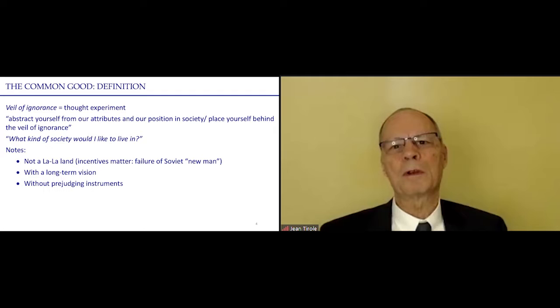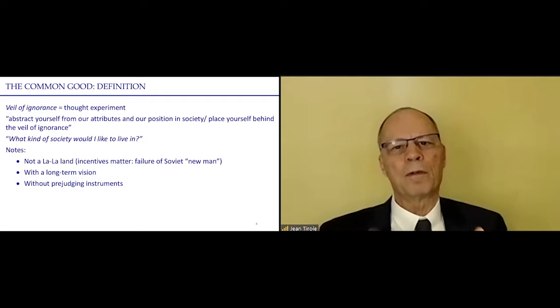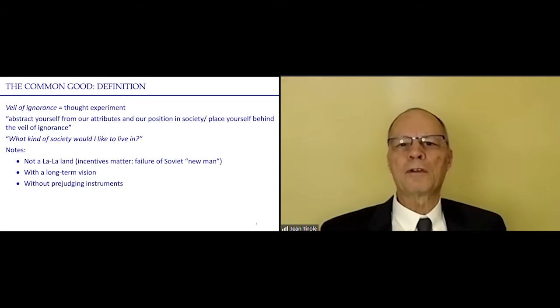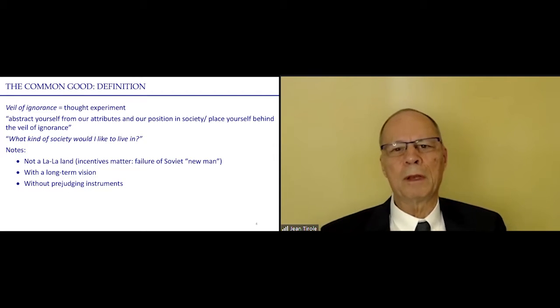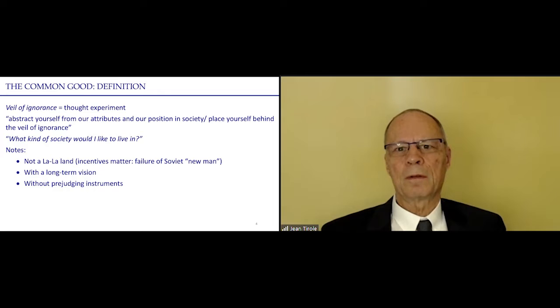But what is the common good? The common good can be defined through a thought experiment. This thought experiment has been designed by philosophers over the centuries, and it's called the Veil of Ignorance. It's a very simple thought experiment. Imagine that you are not born yet. You don't know whether you'll be a man or a woman, a Han or an ethnic minority, whether you're born in a rich family or a poor family, or if you are French or Chinese. Maybe you don't know what kind of education you will get, what kind of genes you will get. Will you have cancer or no cancer? That's the kind of situation that you want to consider, and ask yourself a very simple question. In what kind of society would I like to live in?